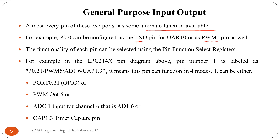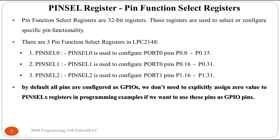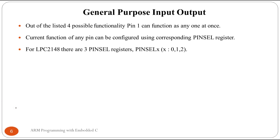The functionality of each pin can be selected using the pin function select register. For example, pin one in the diagram has four functionalities as already discussed, and out of these four we can select only one using the pin select register. We have three pin select registers: pin select 0, pin select 1, pin select 2, and pin select 3. Three 32-bit registers are required because for one pin we need two bits.